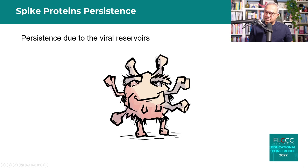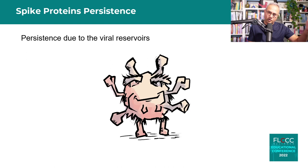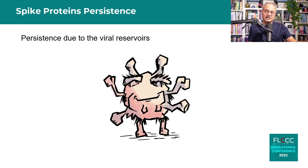There are two types of hosts for viral persistence. First, immunocompromised or immunosuppressed patients — for example, a study from South Africa showed a woman with HIV who had SARS-CoV-2 for 256 days. On the other hand, even immunocompetent patients can harbor SARS-CoV-2 for up to 90 days, and possibly beyond, as demonstrated by studies.